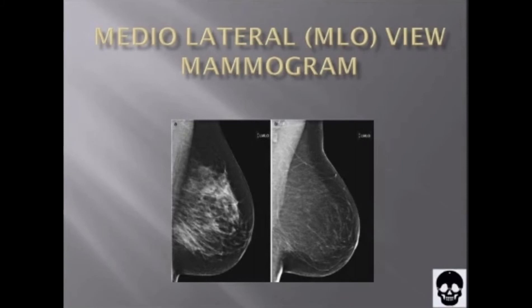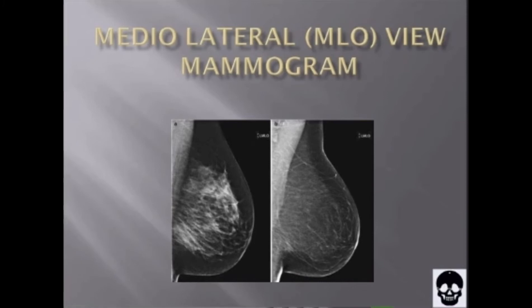Adjust the IR in accordance with the height of the client. It is of vital importance that the correct angle of the IR is selected. Suboptimal positioning and incorrect angle selection could result in excessive compression force being applied to the chest wall or axilla. This may cause unnecessary discomfort to the client and result in inadequate compression of the breast.